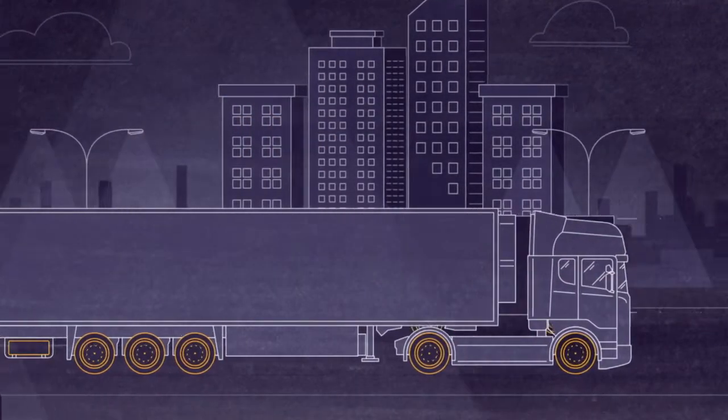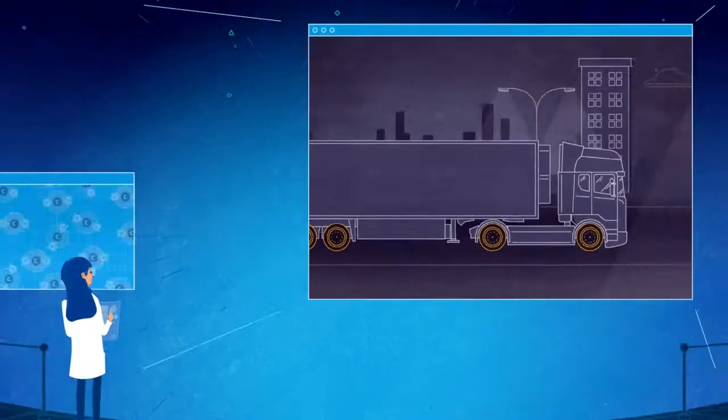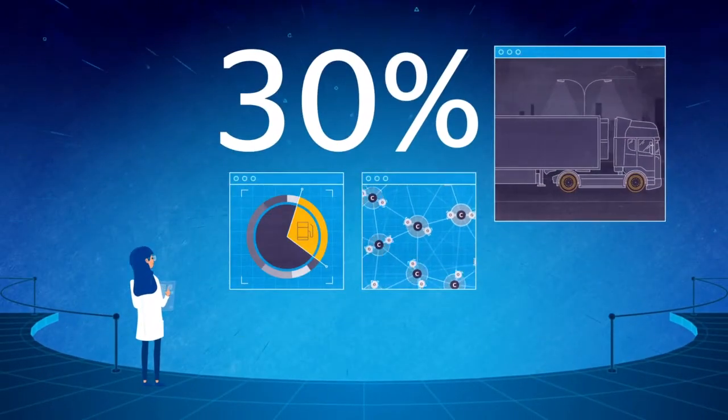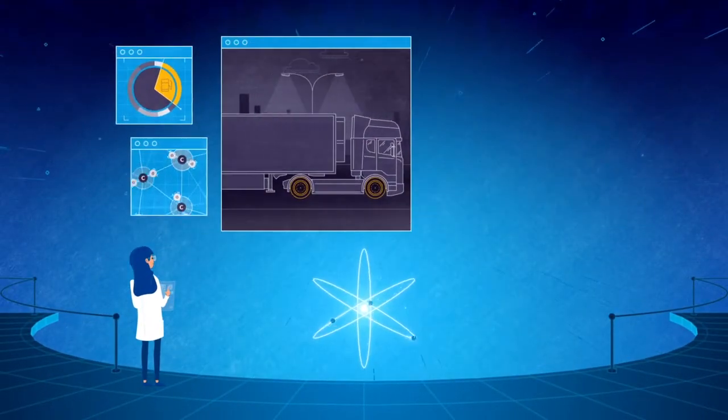Did you know that the rolling resistance of your tires accounts for up to 30% of the fuel consumption and CO2 emissions of your fleet?